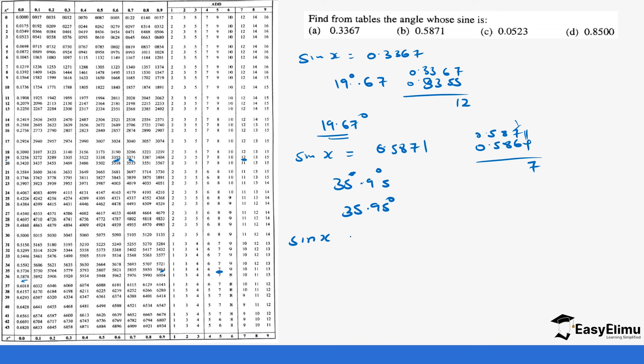You continue with sin x equals 0.0523. We have 0.0523 which is at 3 degrees. That one was directly from the table. For 0.8500, we may not be able to check it in this table because our table goes up to 0.934, but if you continue to the next page you can solve the last question.